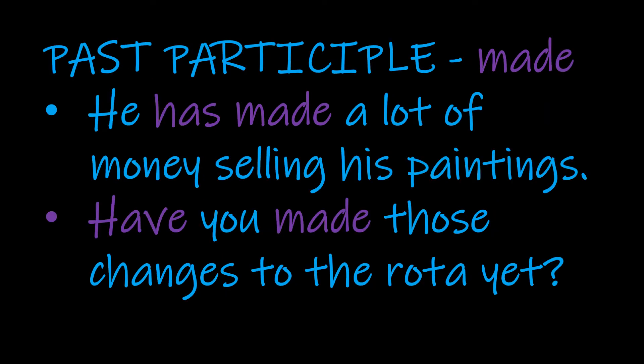Past participle examples then. He has made a lot of money selling his paintings. Although the selling of the paintings occurred in the past, we're thinking about his current situation — he has made a lot of money up to this point in time. And then in question form we get our auxiliary at the beginning: Have you made those changes to the report yet? We've got the word yet at the end, which makes me think we expected changes to be made. If I ask have you done something yet, I'm hoping the answer is yes, and probably I've already asked you to do the thing — that's a lovely little signal we get with yet.